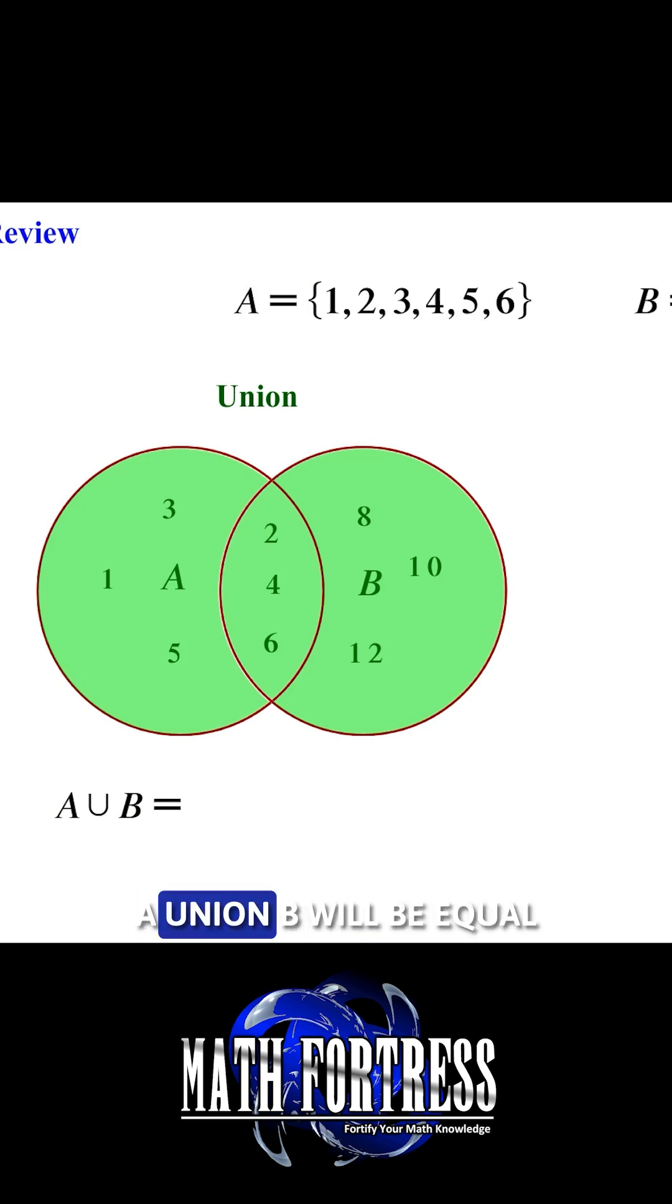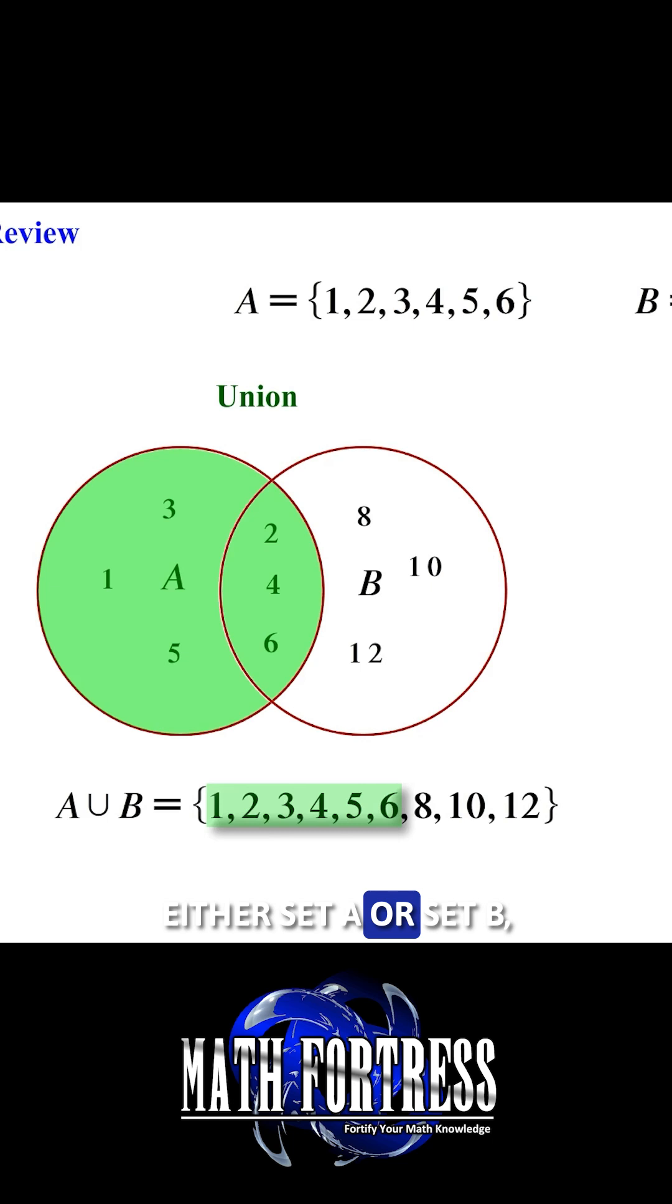In this example, A union B will be equal to a new set that contains every element that is in either set A or set B, including those elements that are common to both set A and B.